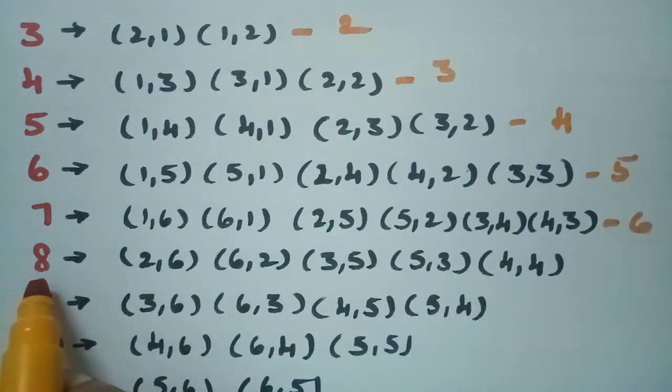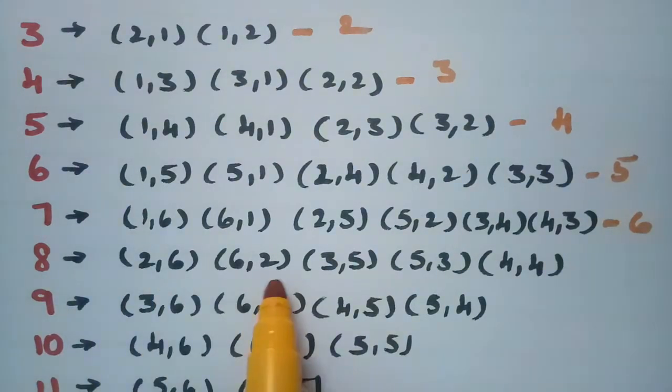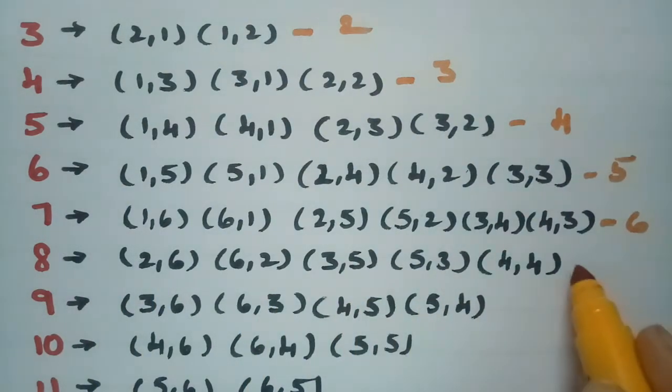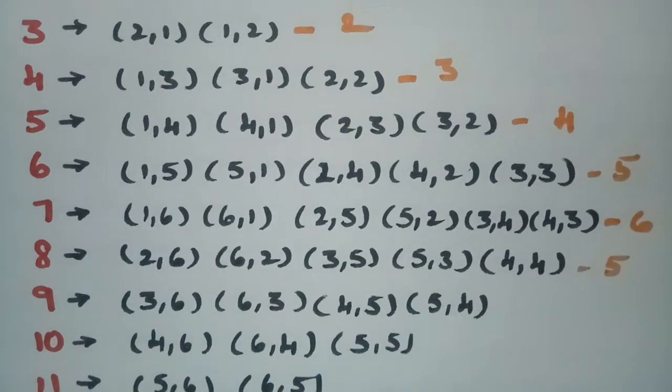For getting eight as a sum when two dice are thrown, the outcomes are (2,6), (6,2), (3,5), (5,3), and (4,4) — total five chances.